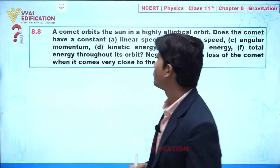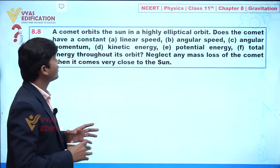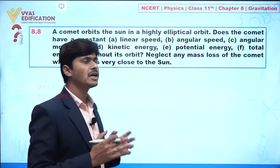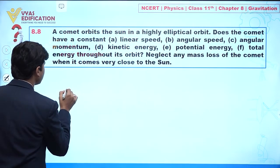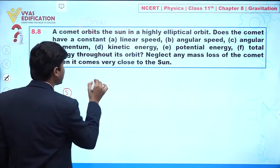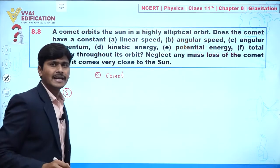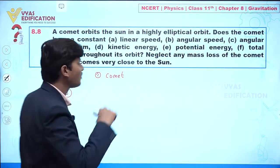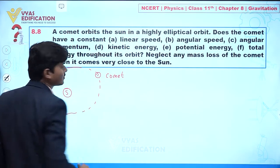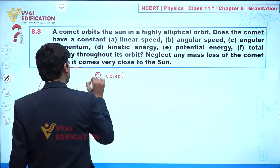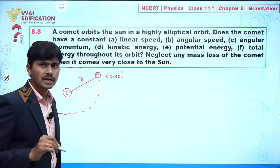We are going to discuss question number 8.8. In this question, a comet orbits the sun in a highly elliptical orbit. Let's suppose this is the position of the sun, and this is the comet revolving around the sun in an elliptical orbit. The line joining the sun and the comet has length r.